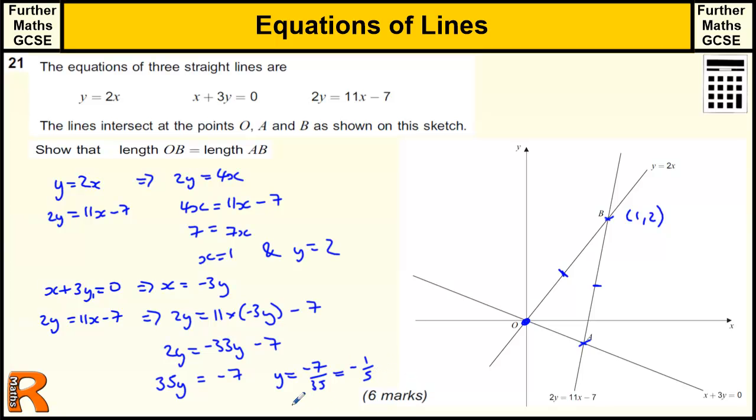So that's minus 0.2. So that tells us that the x value is going to be minus 3 lots of the y value. So minus 3 lots of minus 1 fifth is 3 fifths. Okay, so this coordinate is 3 fifths, which is 0.6 by minus 0.2. So then, that's another 2 marks again, that part.